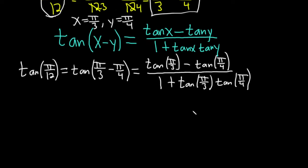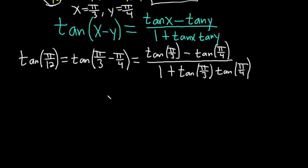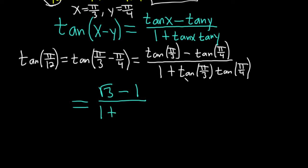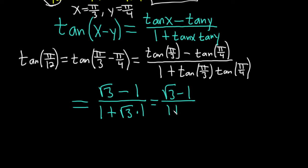Now we just have to figure out what these trig function values are. Tangent of pi over 3 is the square root of 3, minus tangent of pi over 4 which is 1. Divided by 1 plus square root of 3 times 1. This gives us square root of 3 minus 1, over 1 plus square root of 3.